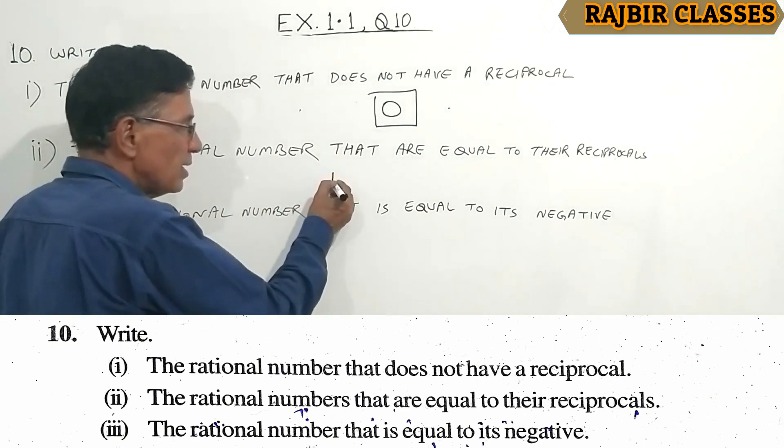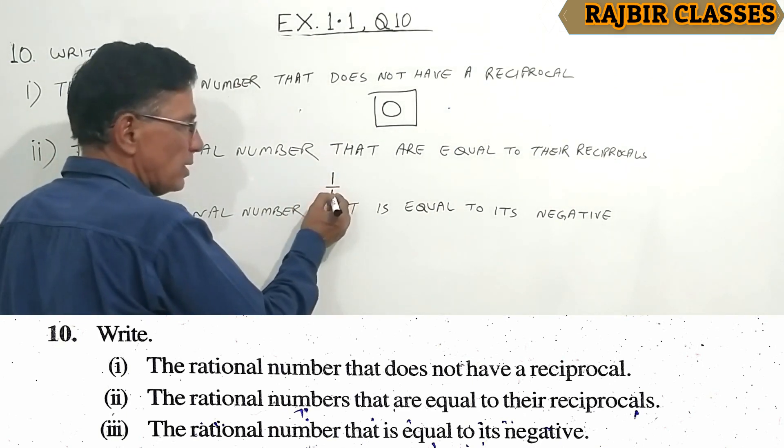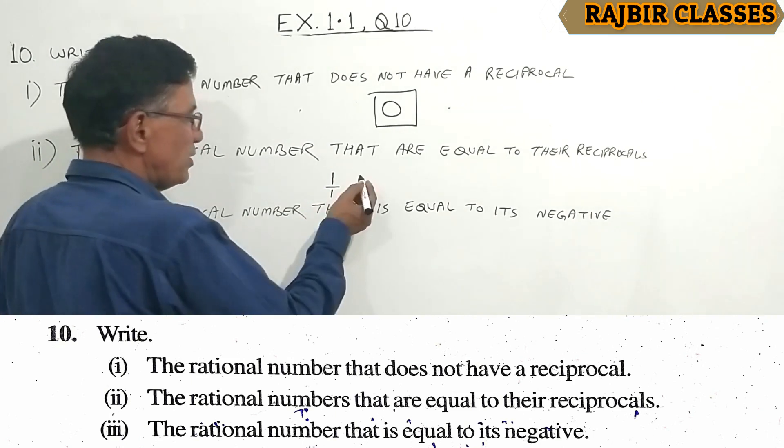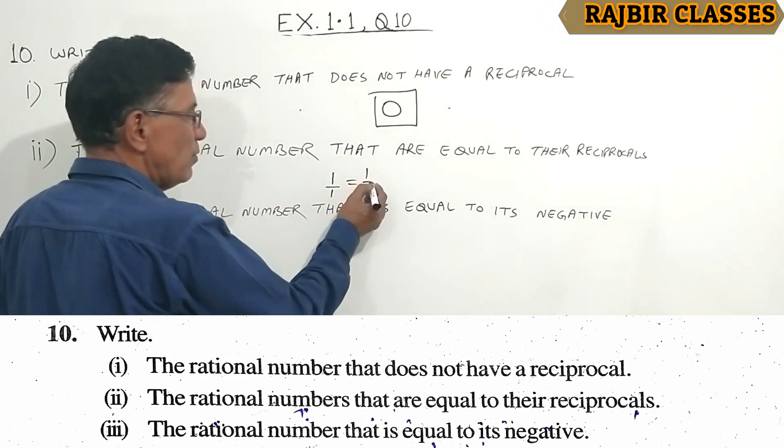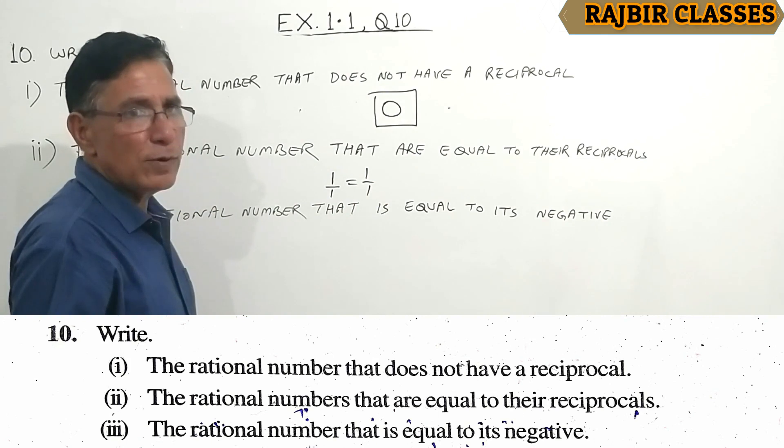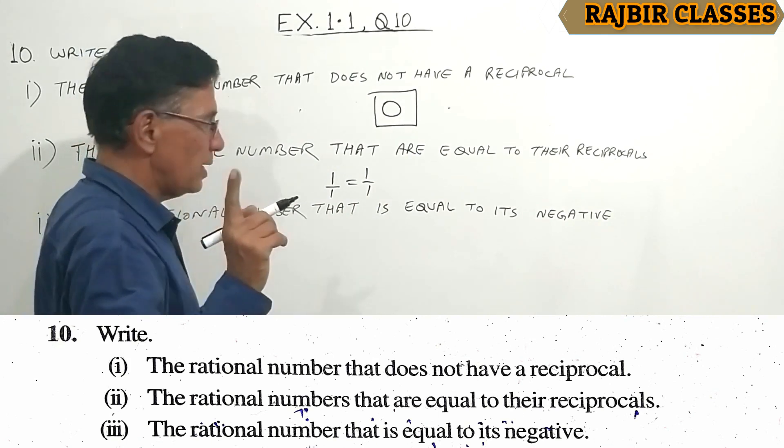Like 1, which means 1 by 1, right? The reciprocal is also 1 by 1. So 1 equals its reciprocal.